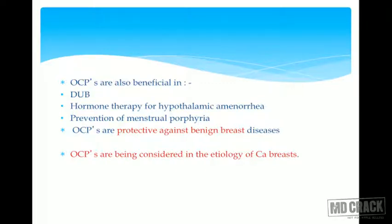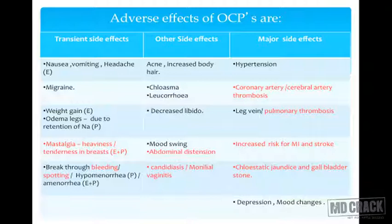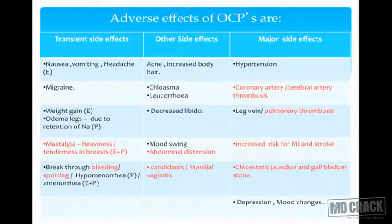OCPs are considered in the etiology of carcinoma breast, so the role is variable and not well defined. Non-serious side effects include nausea, vomiting, headache, migraine precipitation, breakthrough bleeding or spotting, amenorrhea for a while after use due to atrophic endometrium, and breast discomfort or mastalgia.